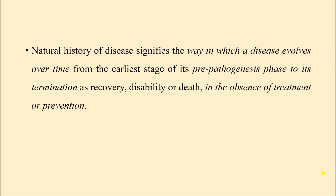Natural history of disease signifies the way in which a disease evolves over time from the earliest stage of its pre-pathogenesis phase to its termination as recovery, disability, or death — in the absence of treatment or prevention. It starts from the stage of pre-pathogenesis, then there is the stage of pathogenesis, followed by termination of the disease. A disease can terminate by spontaneous recovery, or the disease turns into a chronic state leading to disability, or sometimes it can lead to death. There must not be any treatment, preventive measures, or interventions to observe the natural history of disease.